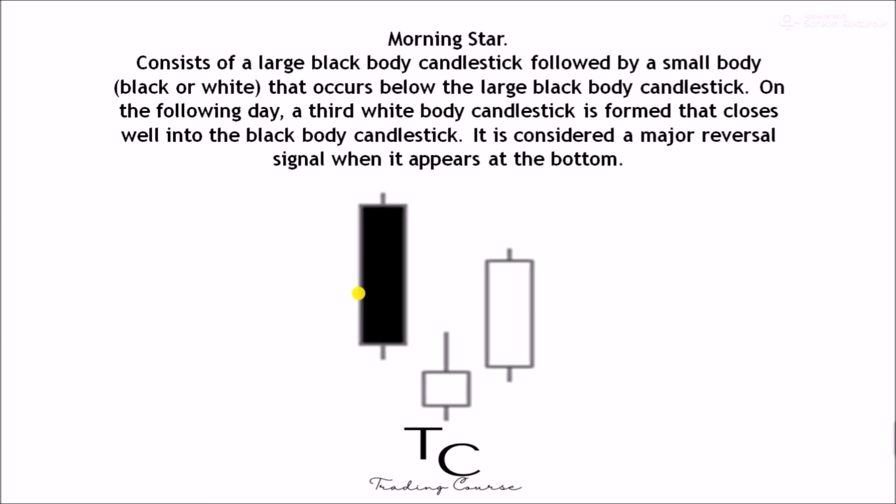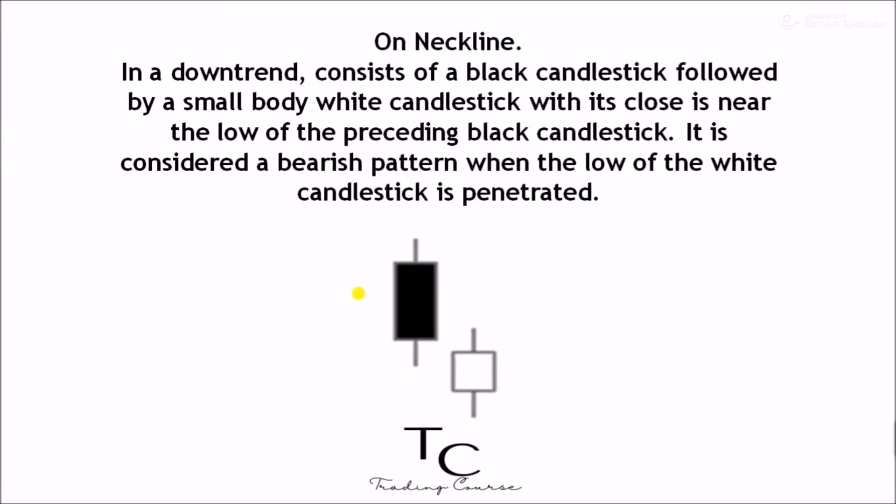On the following day, a third white body candlestick is formed that closes well into the black body candlestick which appeared before the doji. Considered a major reversal signal that is more bullish than the regular morning star pattern because of the existence of the doji. Morning star — consists of a large black body candlestick followed by a small body, black or white, that occurs below the large black body candlestick. On the following day, a third white body candlestick is formed that closes well into the black body candlestick; considered a major reversal signal when it appears at the bottom. On neckline — in a downtrend, consists of a black candlestick followed by a small body white candlestick with its close near the low of the preceding black candlestick; considered a bearish pattern when the low of the white candlestick is penetrated.